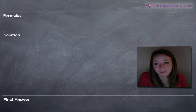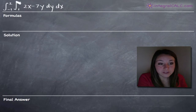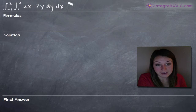Today we're going to be doing a double integrals problem. The one we're going to be working on is the integral from negative 1 to 2 of the integral from 1 to 3 of 2x minus 7y, dy dx.